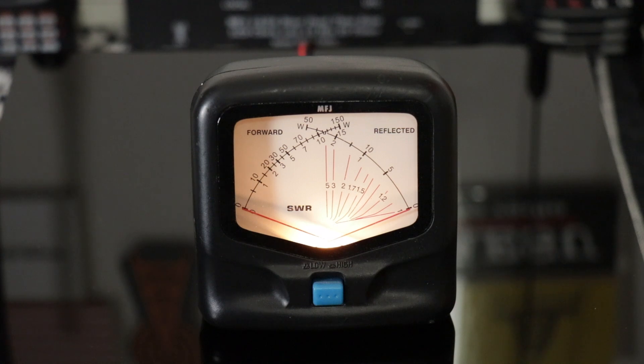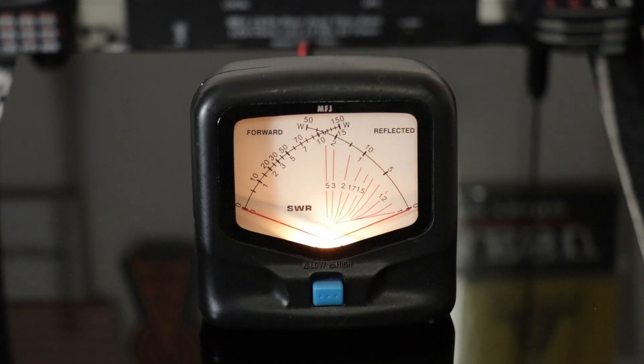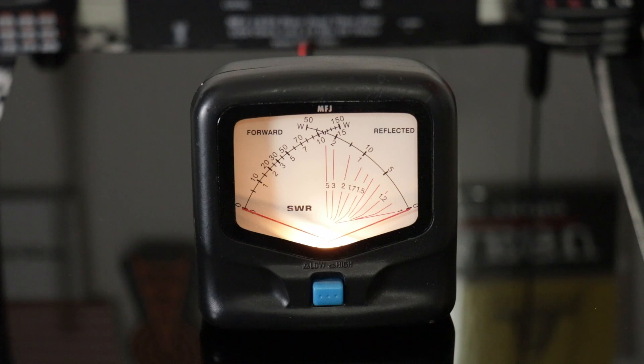First up we have the MFJ 842. It has a frequency range of 140 to 525 megahertz, input impedance 50 ohms, power range 15 and 150 watt forward power, 50 watts reflected power, and those can be changed through the little blue button at the bottom. Minimum input power is 1 watt. Connectors on the back are UHF. Dimensions are 3.35 inches wide by 3.43 inches high by 3.74 inches deep. Weighs about half a pound.